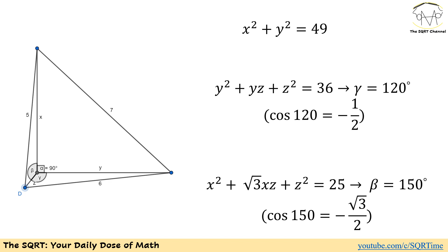For the y, z, 6 triangle: cos(120°) = −1/2, so −2·cos(120°) = +1, which matches the coefficient of yz. Therefore γ = 120°. For the x, z, 5 triangle: cos(150°) = −√3/2, so −2·cos(150°) = √3, matching the coefficient of xz. Therefore β = 150°.